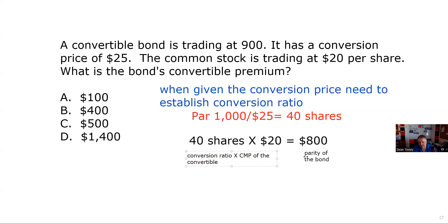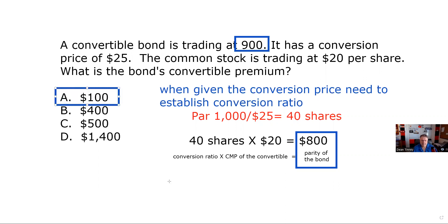That's what I did. So now I'm back in business because now I can look at my answer set. So now we go back and see what the bond is trading at. The bond is trading at $900. And we just calculated parity is $800. And so our answer here is A. That is the premium because the bond is trading at $100 premium to parity.